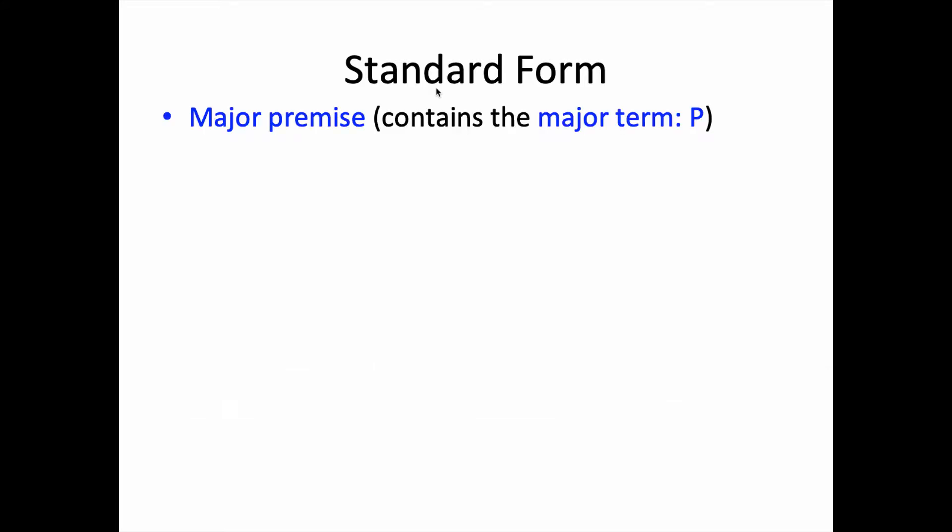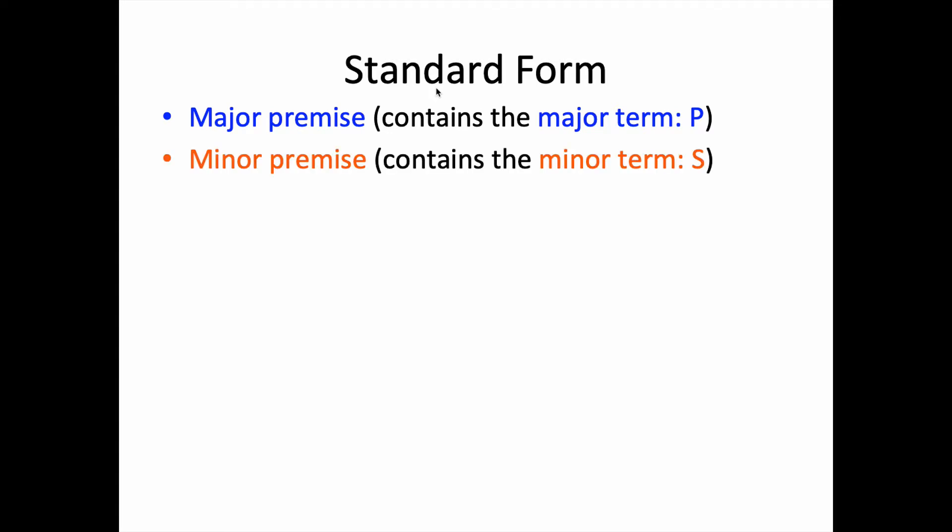Now let's talk about standard form for the categorical syllogism. A categorical syllogism is a three-proposition argument. More specifically, it is an argument consisting of three categorical propositions. When these sentences are arranged in standard form, we have the major premise, the minor premise, and then the conclusion.